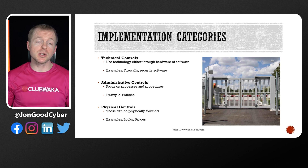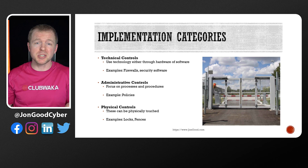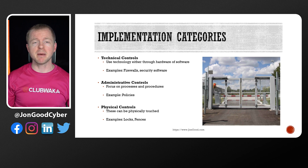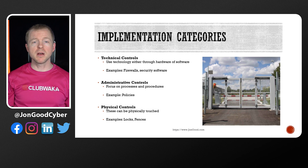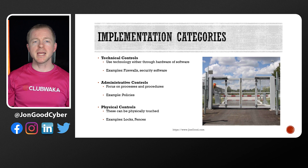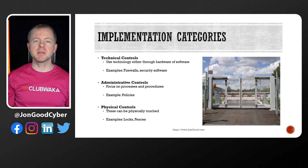Three major categories of how controls are implemented are: technical controls, which use some type of technology to actually improve our security — so firewalls, security software, and authentication are all different examples. We have administrative controls, which focus on processes and procedures for some aspect of security — so incident response plans, business continuity plans, and security awareness are all different forms of administrative controls. And then we have physical controls, which refer to some physical component, and some of the most frequently discussed are locks and fences.